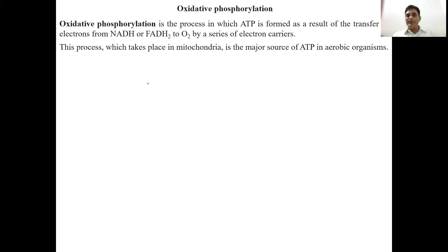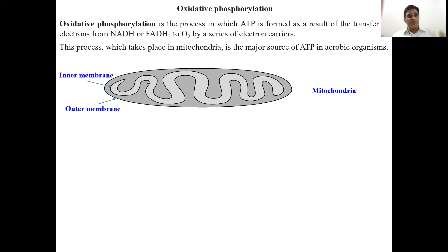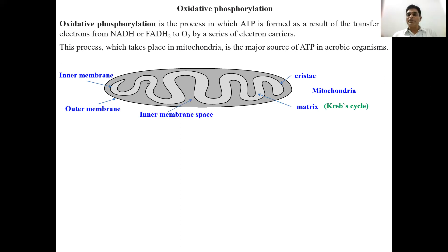This process takes place on the inner wall of the mitochondria, and ATP synthesis occurs in aerobic organisms — hence mitochondria is called the powerhouse of the cell. The mitochondria structure: outer membrane, inner membrane forming cristae, matrix in the center where the Krebs cycle takes place, and the inner membrane space between the membranes.